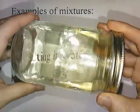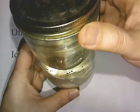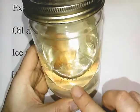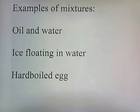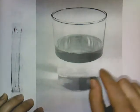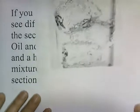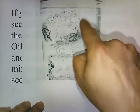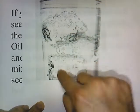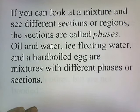This is oil and water — you can see there's a layer. The bottom part is the water layer and the top part is the oil layer. The oil is in contact with the water but not chemically bonded to it. Here's a picture of oil sitting on top of water, and ice floating in water — you can see different sections of this mixture.